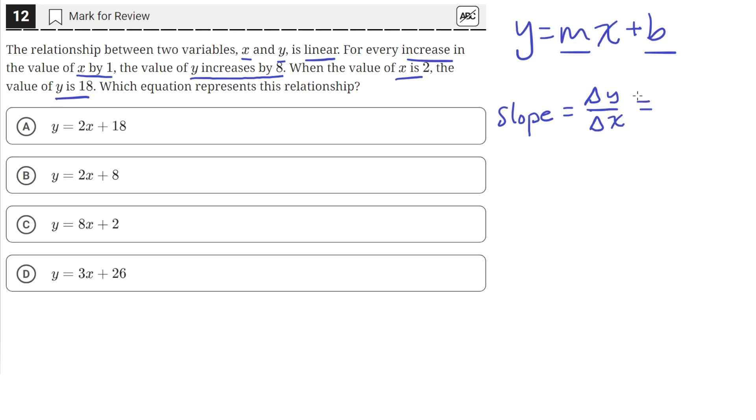And we're given that for a change in 1 of x, y increases by 8. So that means our slope is equal to 8. So that's the value of m.